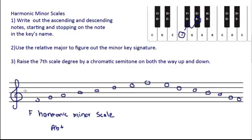A-flat major has four flats: B, E, A, and D. So we can write in those flats. Now we have our key signature written in and now we have our natural minor scale.